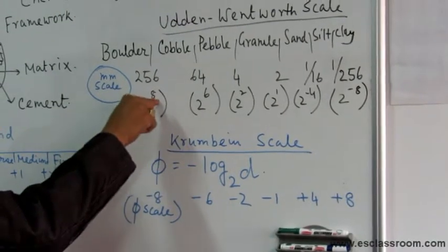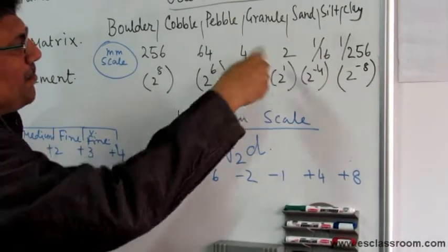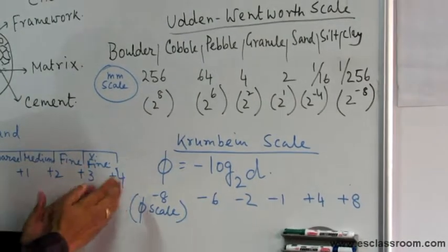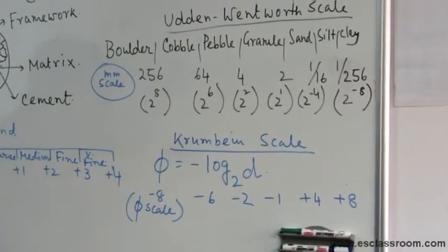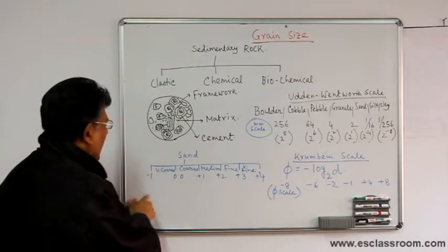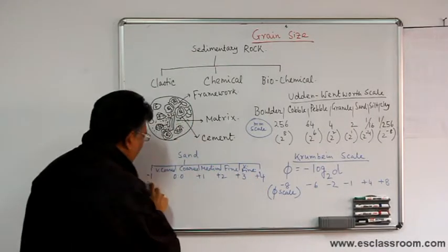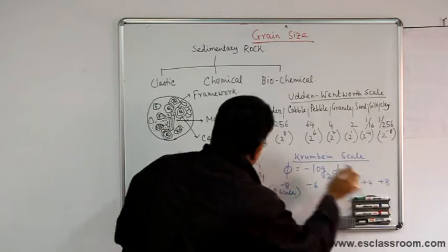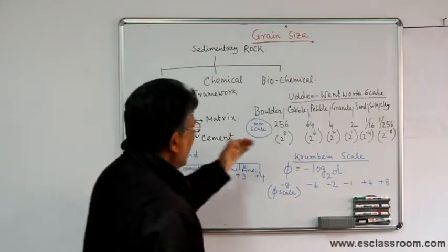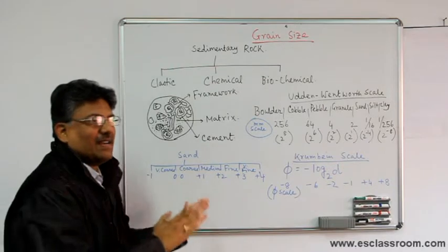For example, 2 to the power of 8 (256 mm) converts to a phi value of minus 8, and 2 to the power of minus 4 (1/16 mm) converts to phi plus 4. So all grains in the phi scale come out as simple integers. Within this system, sand — the most commonly occurring grain — is further subdivided into very coarse, coarse, medium, fine, and very fine, ranging from phi minus 1 to phi plus 4.